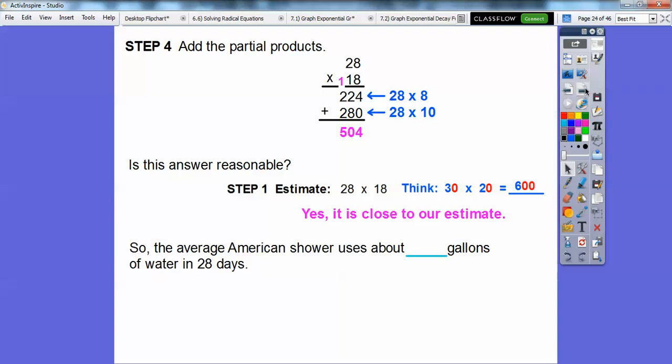So let's answer the question here. The average American shower uses about a little over 500 gallons of water in 28 days. That's a lot of water, isn't it? 504 gallons.